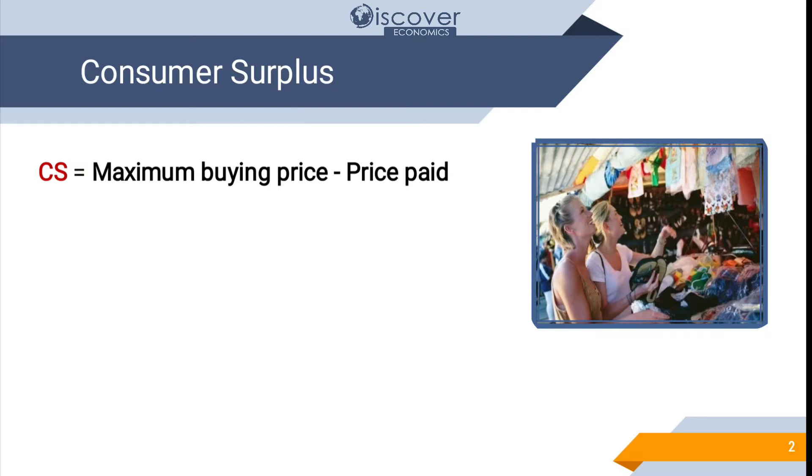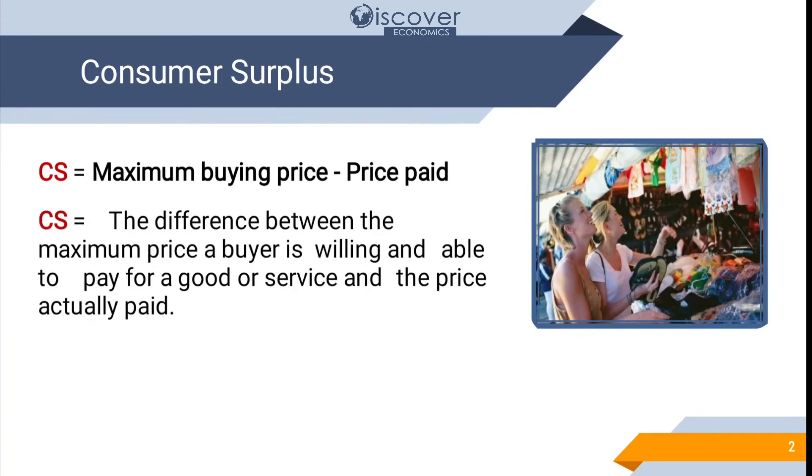So the amount that is there in your mind and when you go to the market but you were able to buy on a lesser price. So the difference between the expected price and the price actually paid would be the consumer surplus. The difference between the maximum price of buyers willing and able to pay for a good and service and the price actually paid. So this difference is known as consumer surplus.